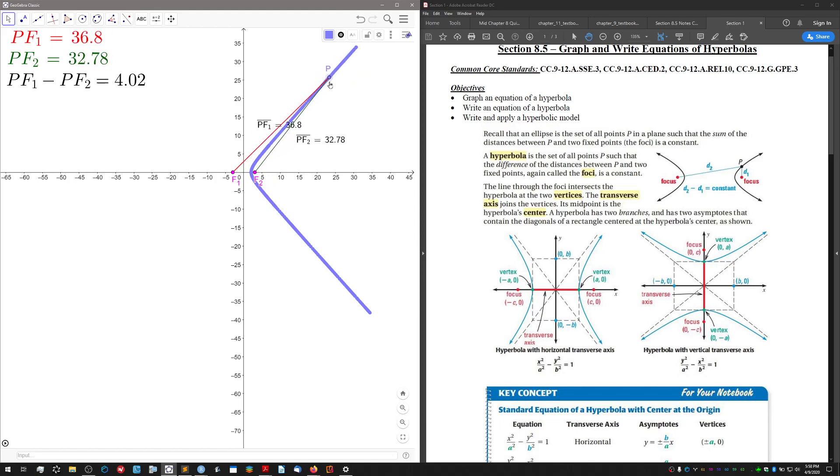If I jump over to the other branch of the hyperbola—remember this is called a branch—I still get the same constant difference, but it can become negative. We're really looking at the absolute value of this difference. All the points that satisfy the property that this distance minus this distance is four are the points that form the hyperbola.